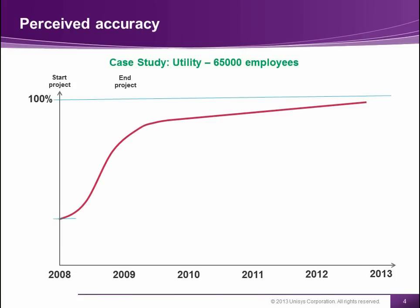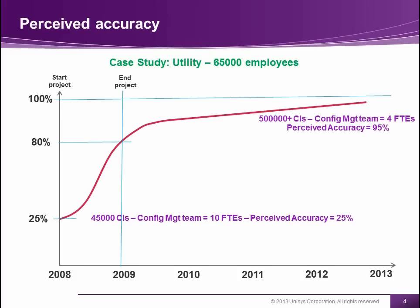This company has 65,000 people across the UK. When we started this project in 2008, we started at somewhere around 25% accuracy. How did I measure that? I was just taking a sample of the content of the database and applying some criteria — which I will explain a little bit later — and measuring how good they are. One CI out of four was okay, so this was not really good, and that's why people were really complaining. They had only 45,000 CIs, almost no relationships, and 10 people looking after them every day. People were saying, 'How do we pay 10 people for such poor results?'